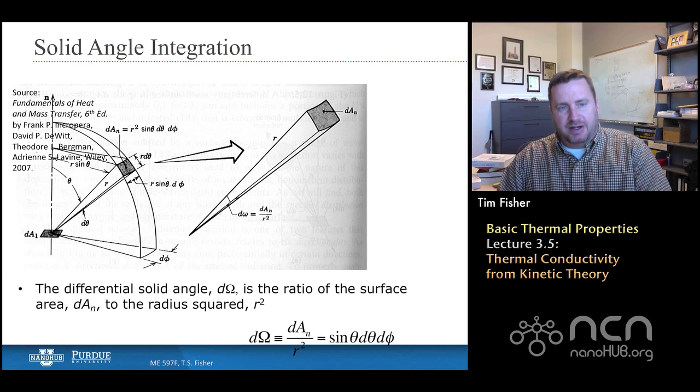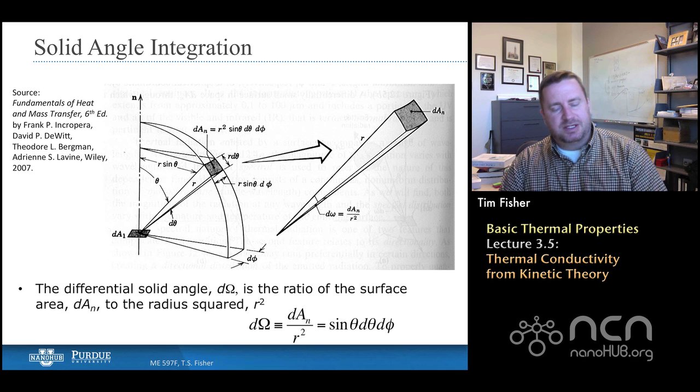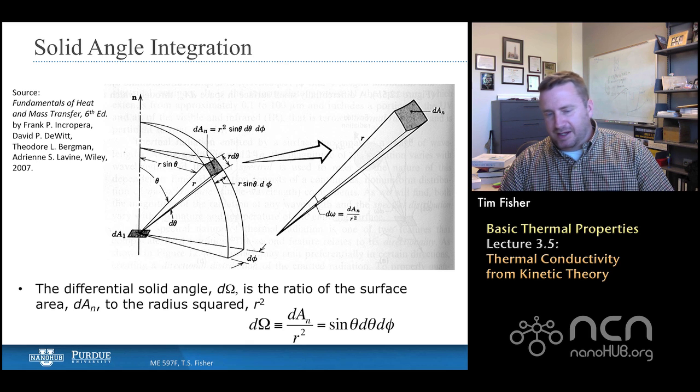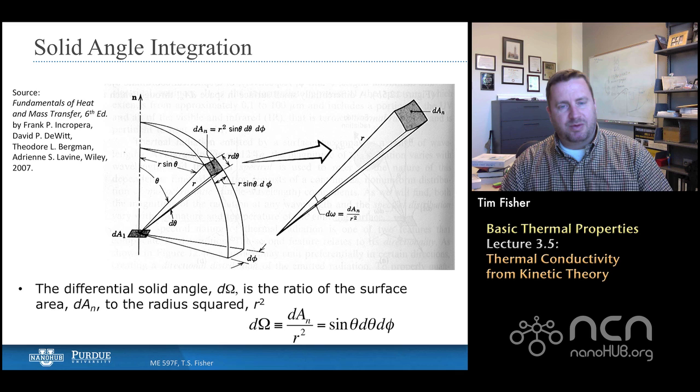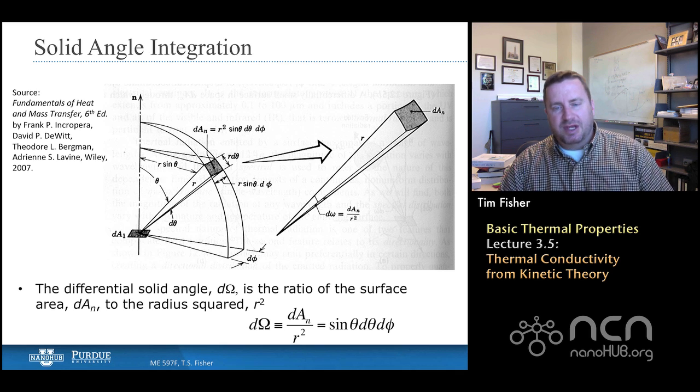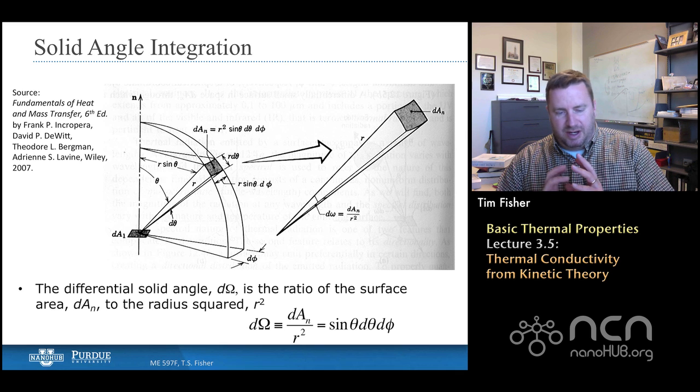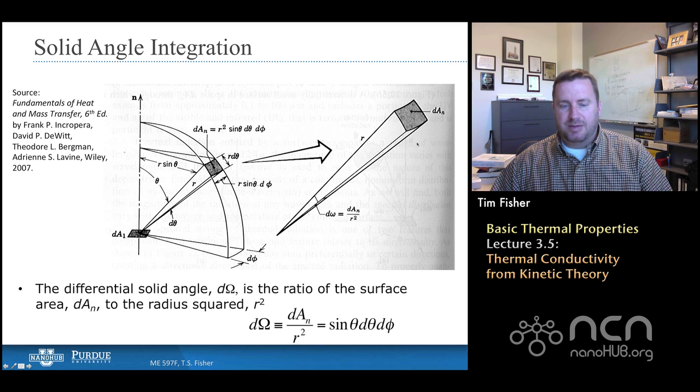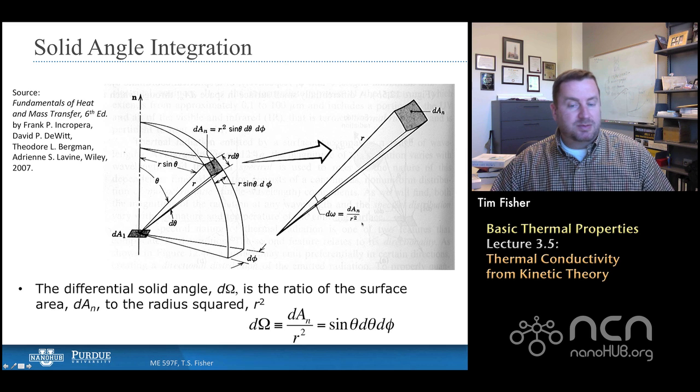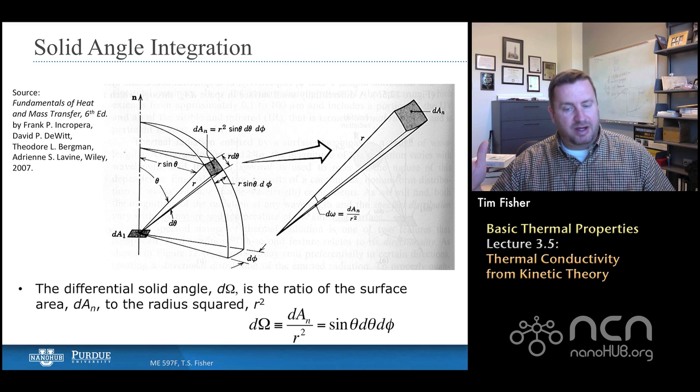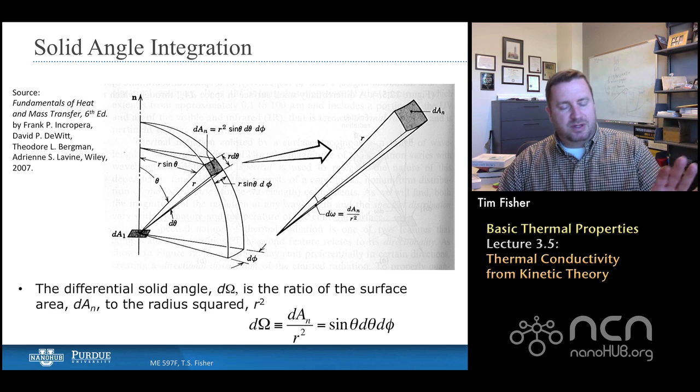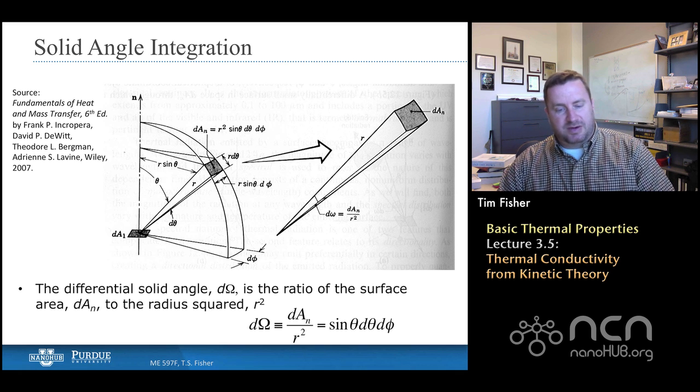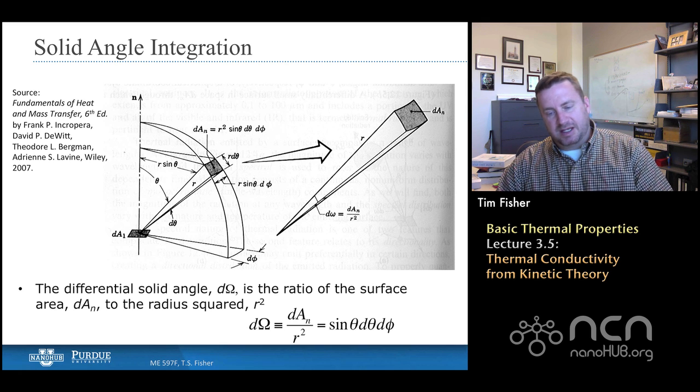If we integrate this with the solid angle, or if we look at the solid angle integration problem, and this is mainly here for your reference, the concept of solid angles is one that often confuses students. A solid angle by definition, or a differential solid angle, is a differential area normal to some central point. That's the dA_N here divided by the distance between that central point and the normal area squared. So that's the R squared term. If you just do the geometry on this problem, you can actually derive it from all of the factors that are given here. You will find that this differential solid angle is indeed the sine theta d theta d phi.